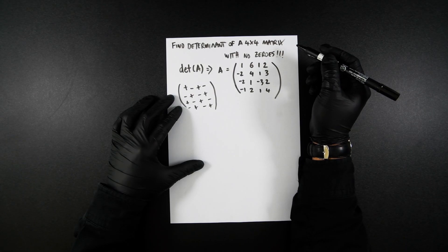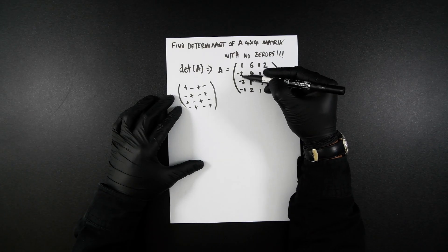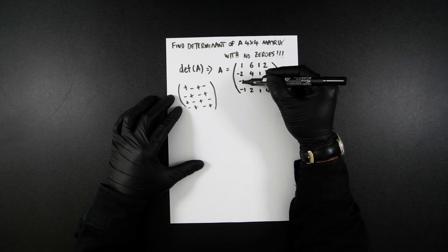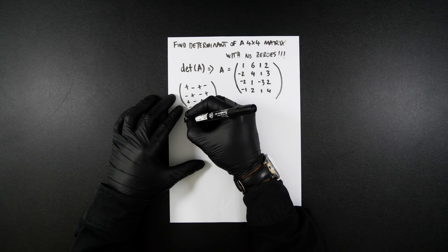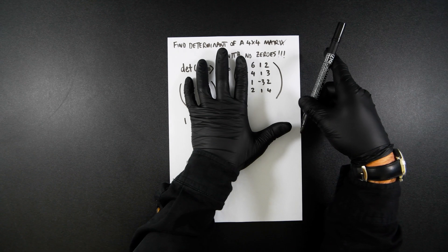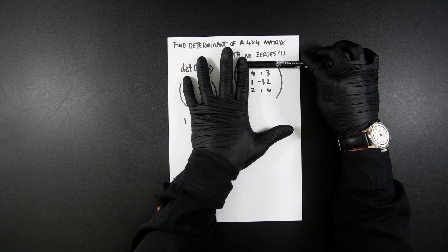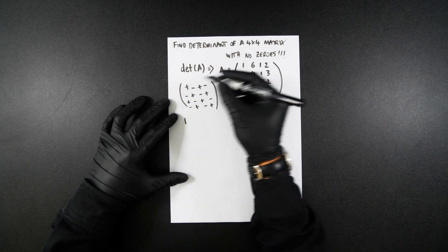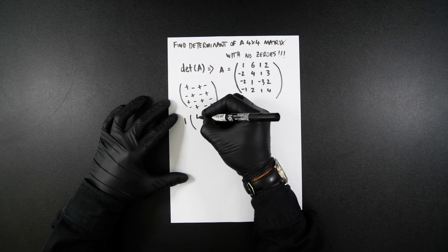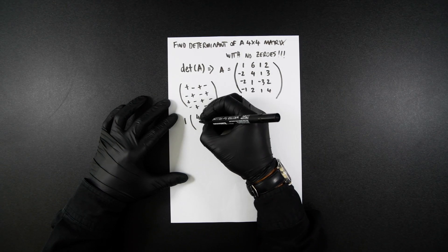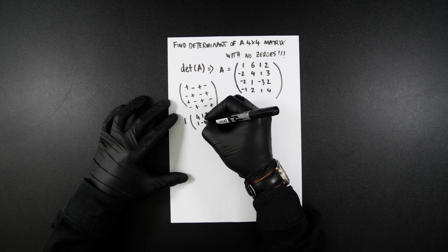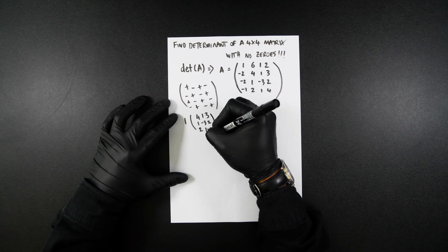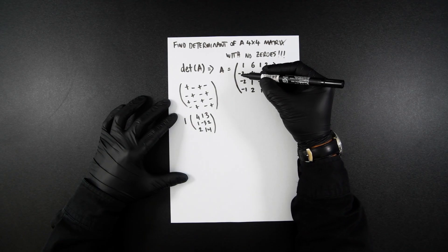So I'm now going to pick this first column. So when you're picking this first column, these are going to be my main points. So I'm going to pick one. When you're picking one, it covers this line and this row, and we can now rewrite out these. It's obviously positive, so it's going to be 4, 1, 3, 1, minus 3, 2, and then 2, 1, 4.